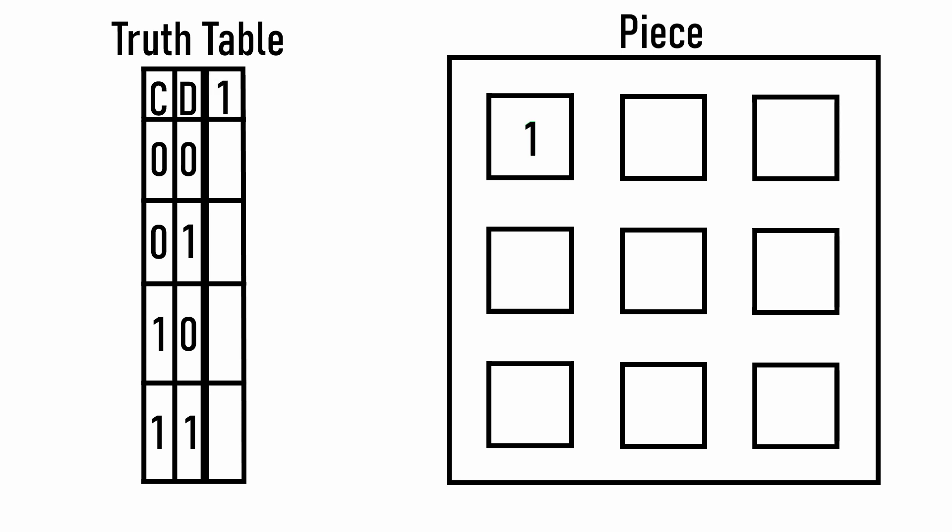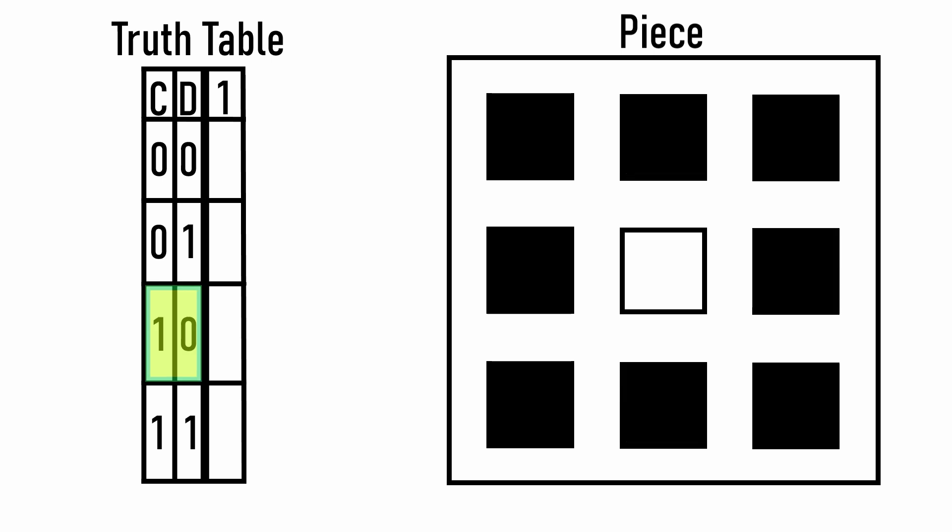Before I start filling in numbers, it's important to know what these inputs even describe. To begin, when C and D are both off, the entire piece should appear off. At the start of the game, when nothing has been played, every piece should be in this state. I'm going to say that if C is off, but D is on, display an X. If C is on and D is off, display an O.